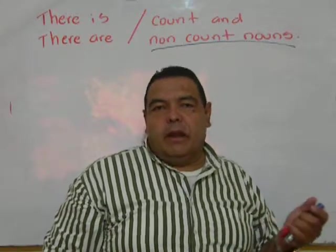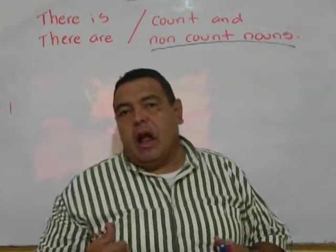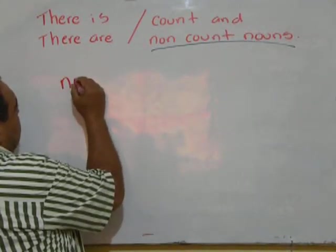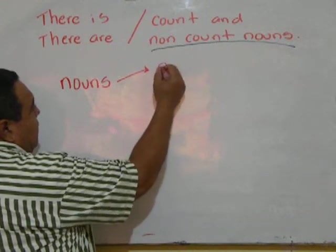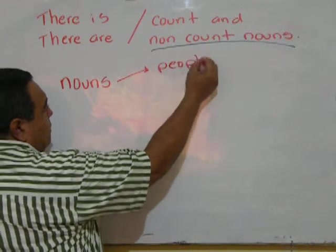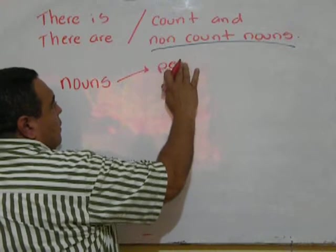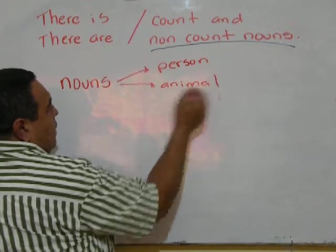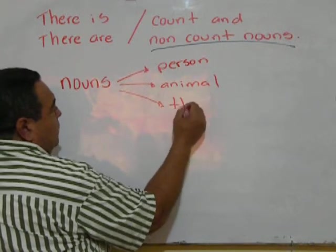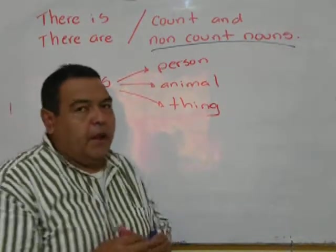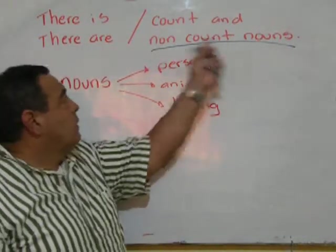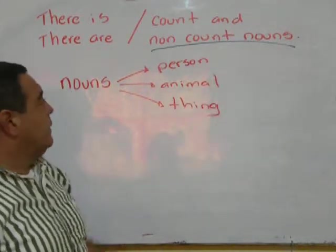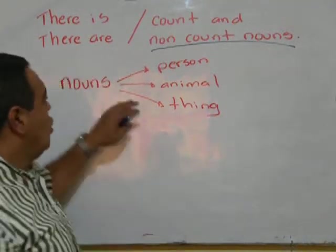So first of all, I'm going to explain the difference between a count and a non-count noun. What are nouns? Let's begin with this. Nouns can be people, it can be a person, it can be an animal, it can be a thing — those are nouns. Count nouns, non-count nouns — in Spanish, sustantivos.